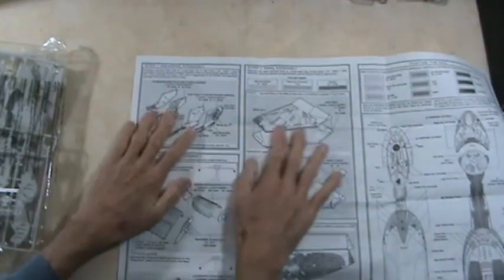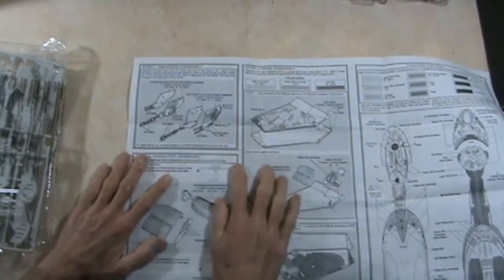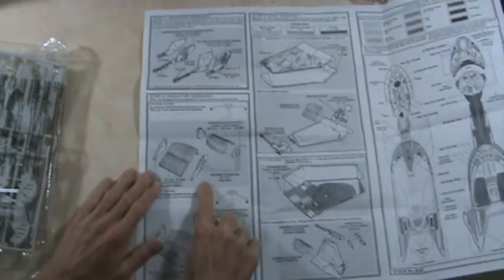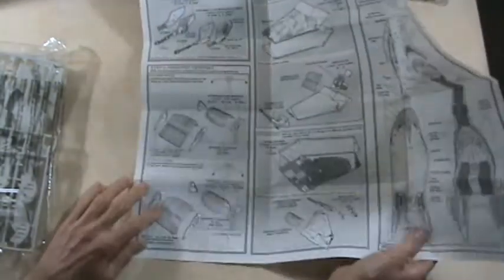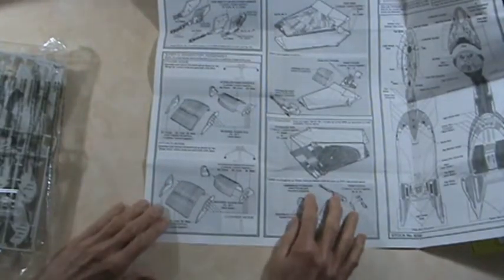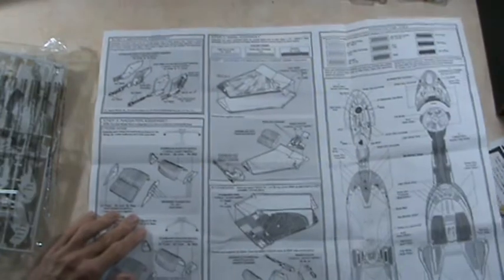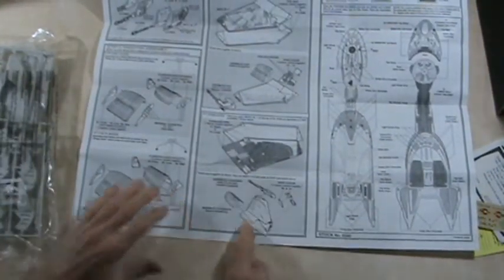Here we are with your assembly instructions. Apparently, you start with the guns, and the radiators, and we know it's not radiators. So that's step two, step three, the wings, if you want to call them wings. And then that shows more assembly here.